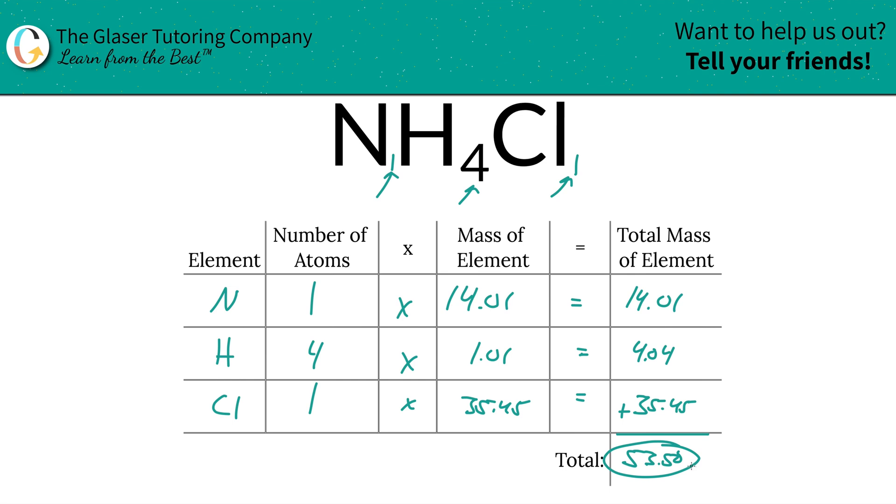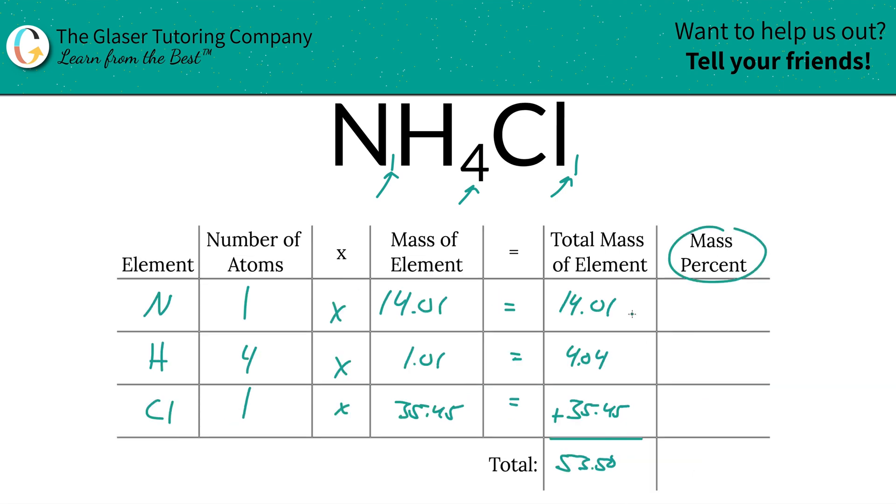Now that we know the total mass, I'm going to add a column to the table. Finding those mass percents are going to be easy as 3.14. Bam. So to find the mass percent of, let's say nitrogen, we're going to take the total mass of nitrogen, which was 14.01, and we're going to divide it then by the total mass of the entire compound, which is 53.50, and then multiply it by 100. That's a simple percent calculation: part over whole times 100. And now when we do the math out, it works out to be 26.19%. So that's the mass percent of nitrogen.